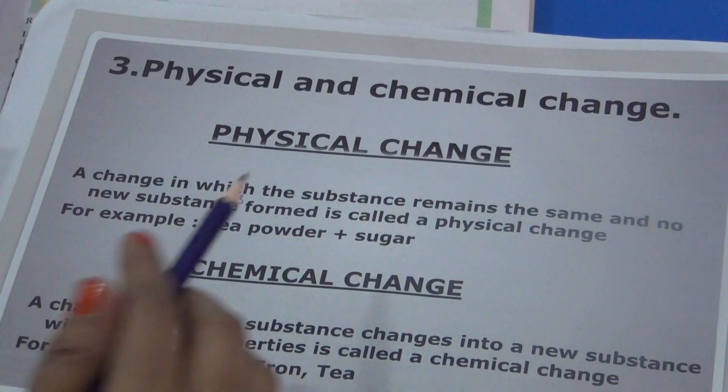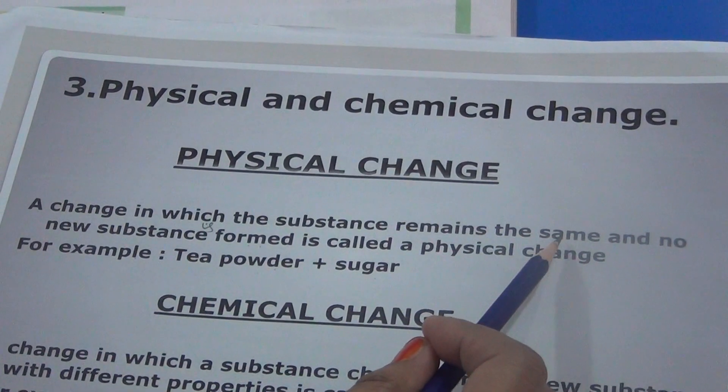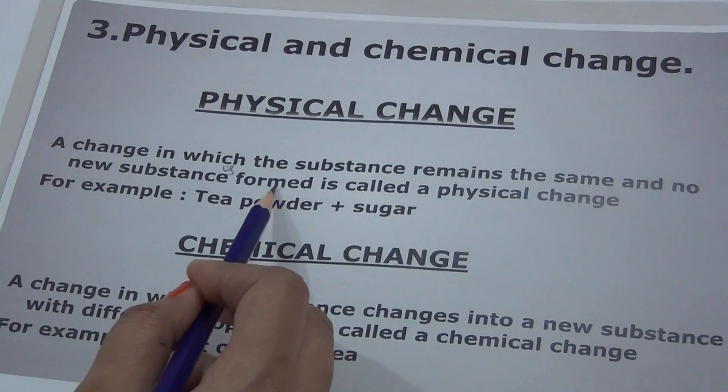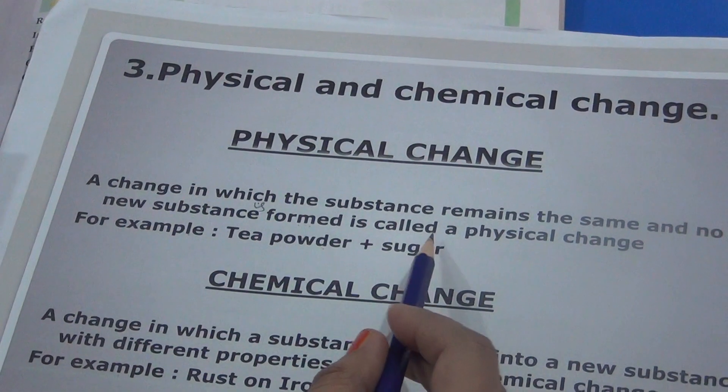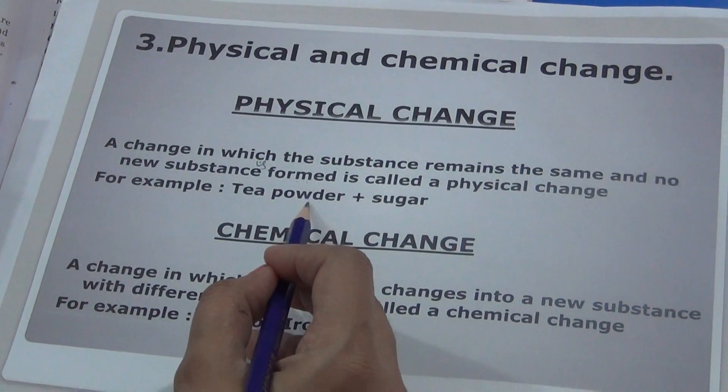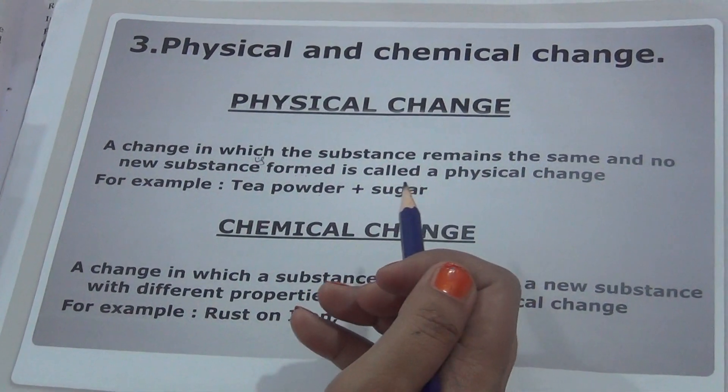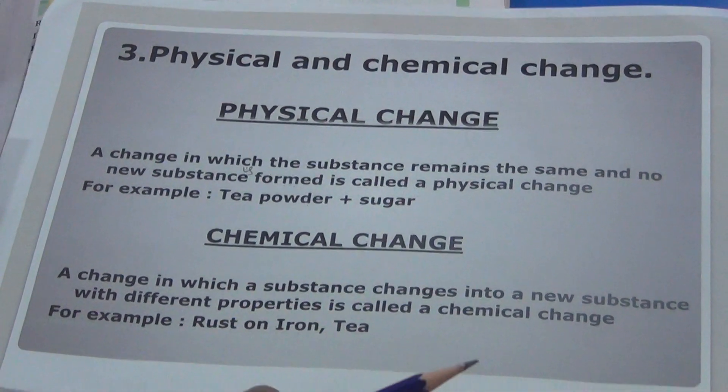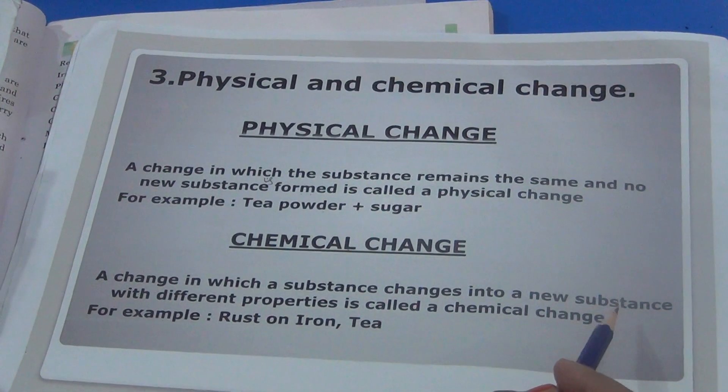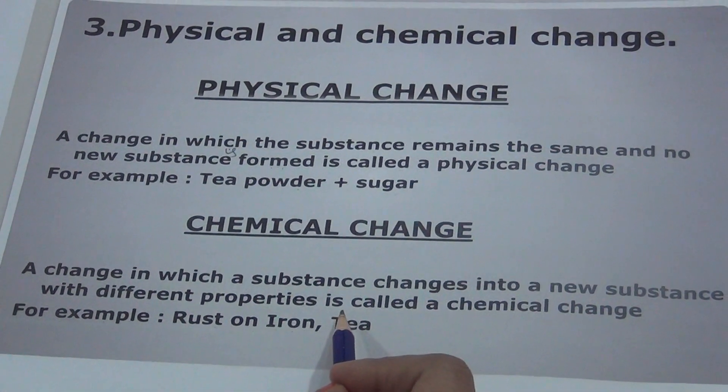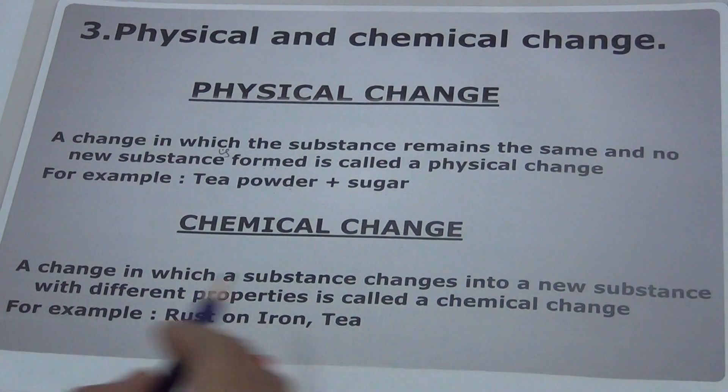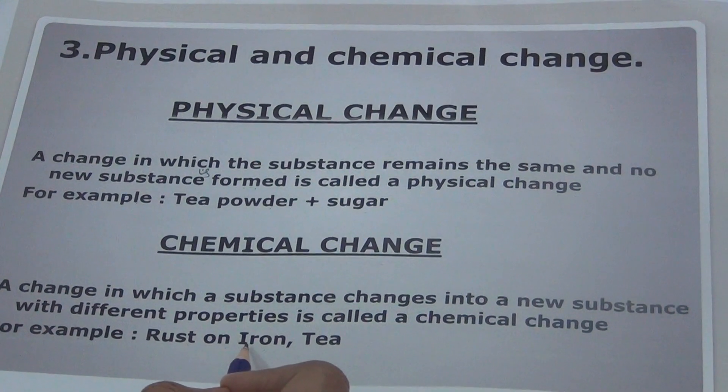Now we have physical and chemical change. A change in which the substance remains the same and no new substance is formed, it's called a physical change. For example, tea powder plus sugar.